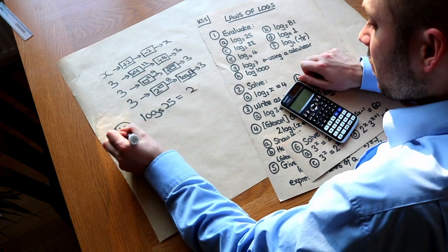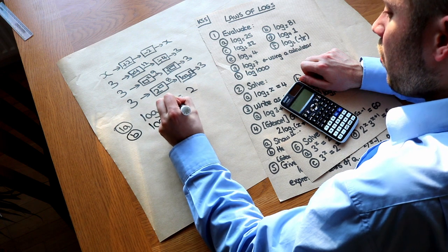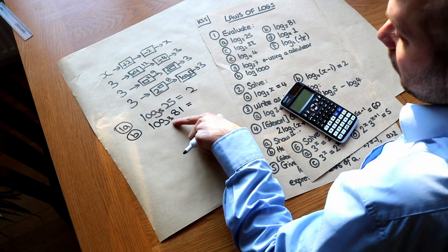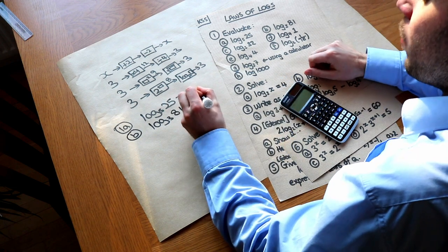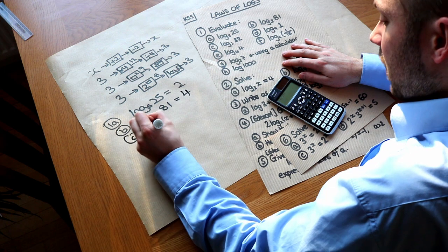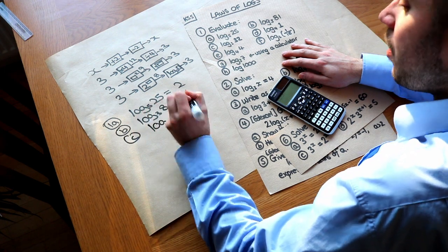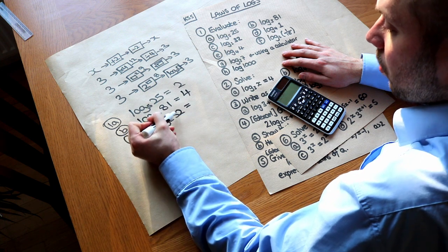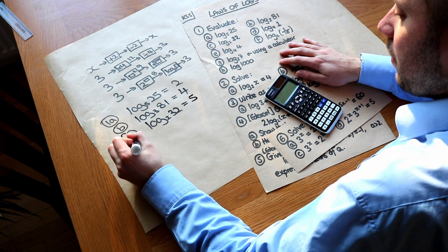For log base 3 of 81: we ask the question 3 to the power of what would give you 81? Well 3 to the power of 4 is 81. For log base 2 of 32: 2 to the power of what is 32? Well it's 5 — 2 to the power of 5 is 32.